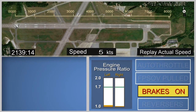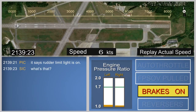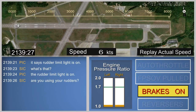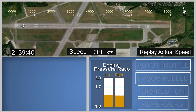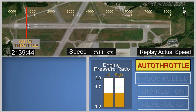The animation is shown again at actual speed with abbreviated comments. As the airplane taxied onto the runway, the flight crew discussed the blue rudder limit advisory message consistent with the gust lock still engaged. After the brakes were released, the throttles were advanced manually until they reached a restriction which corresponded to an engine pressure ratio of about 1.4. The autothrottles were engaged.